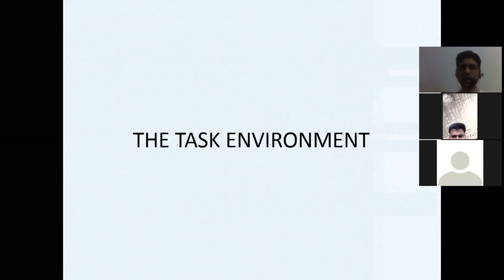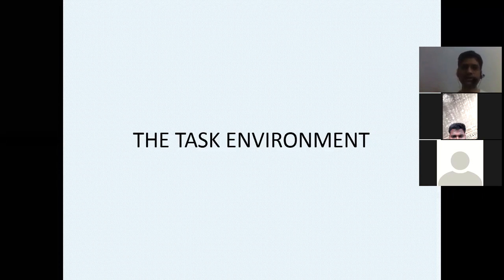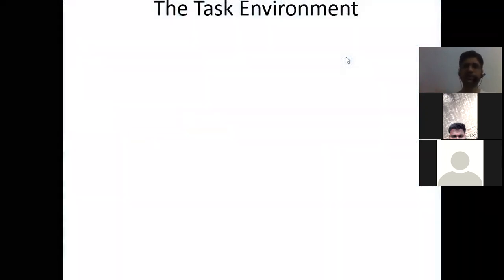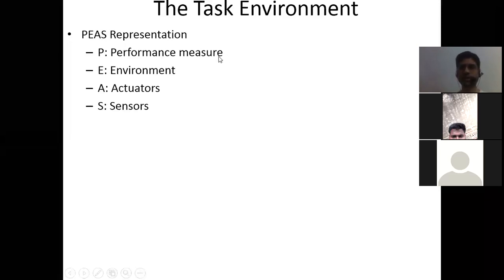Now let's see the task environment. Just as humans are always in some environment in which we do actions, a machine or agent acting on behalf of humans must also have an environment in which it performs tasks. There is an acronym PEAS representing four points of the task environment: P for Performance measure, E for Environment, A for Actuators, and S for Sensors.